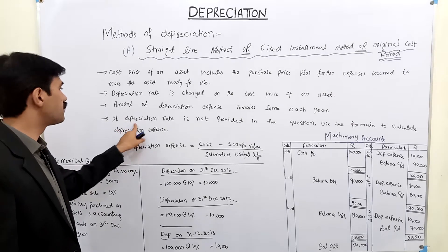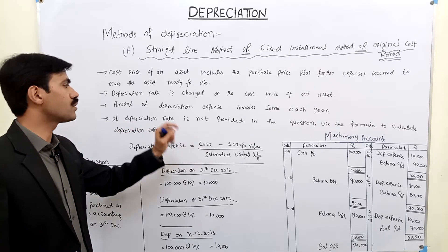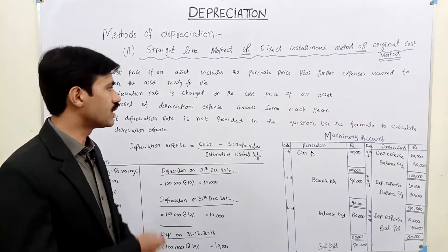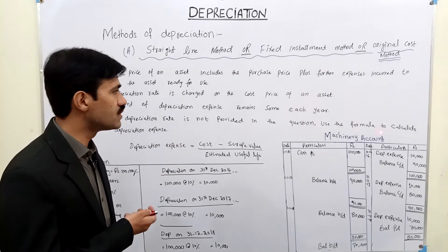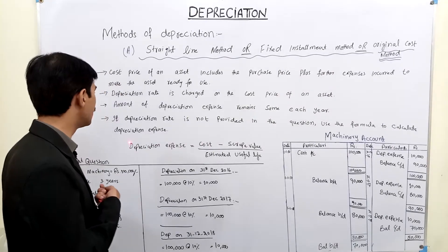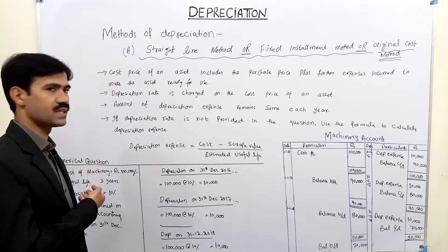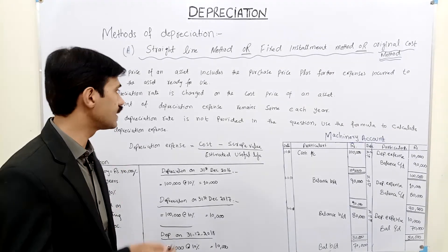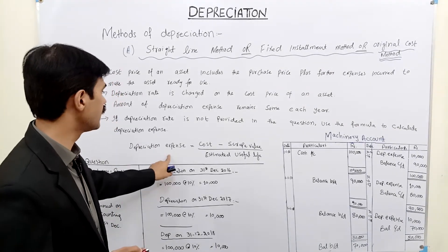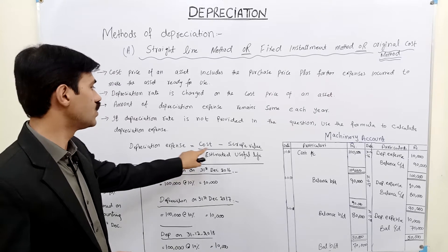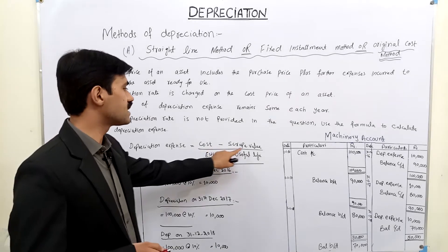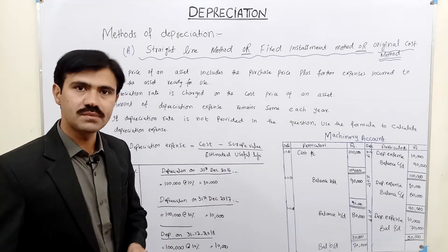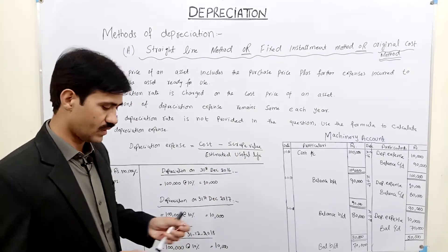The amount of depreciation expense remains the same each year. If the depreciation rate is not provided in the question, then use the formula to calculate depreciation expense: Cost minus scrap value, divided by estimated useful life.